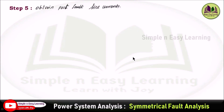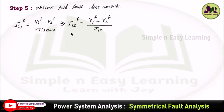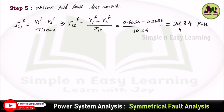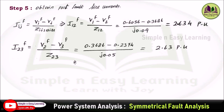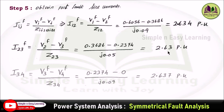Step 5: obtain post-fault line currents using I_ij = (V_i − V_j) / Z_ij(series). For I12: substituting post-fault voltages and series impedance gives 2.634 per unit. Similarly, I23 = 2.63 per unit and I34 = 2.637 per unit. This completes the symmetrical fault analysis using the bus impedance matrix method.